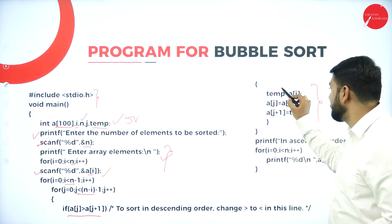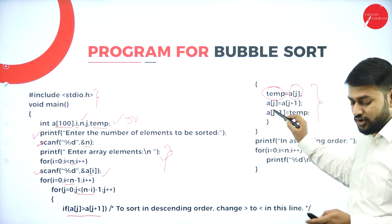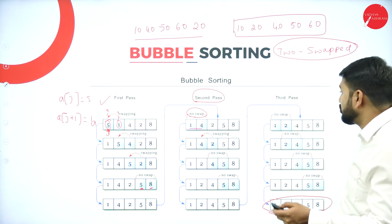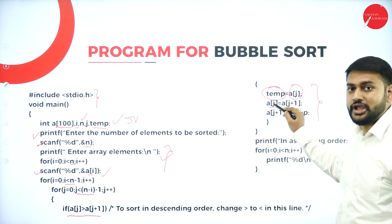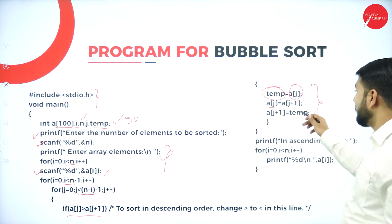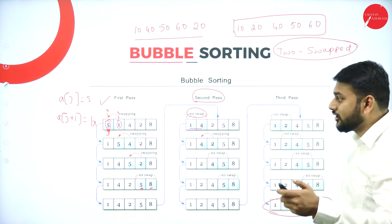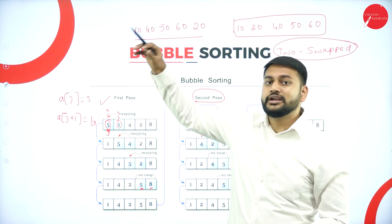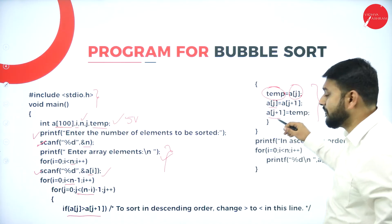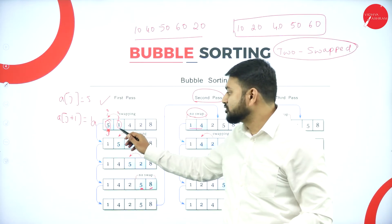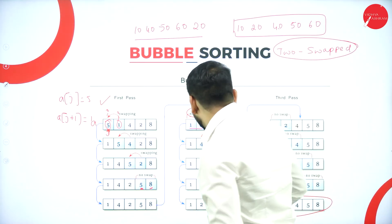To swap, I use a temporary variable temp. I store the value of A[j] in temp, then copy A[j+1] into A[j], then copy temp back into A[j+1]. So if A[j] was 5, temp holds 5, A[j+1]'s value moves to A[j], and then 5 from temp goes to A[j+1]. That's how swapping works.